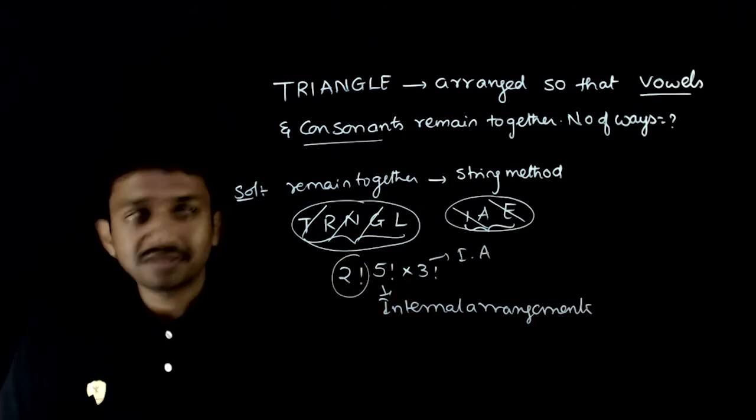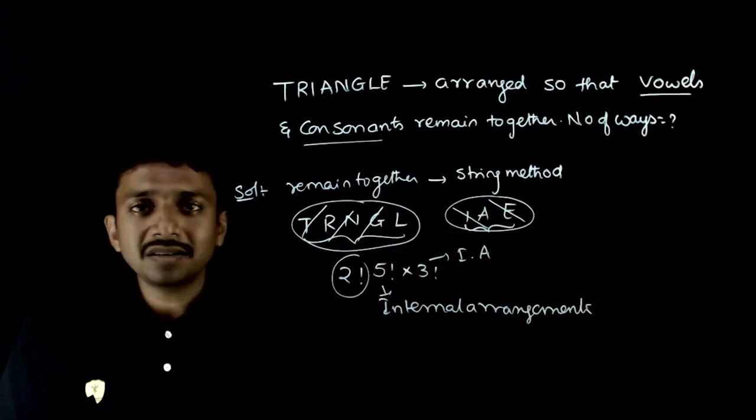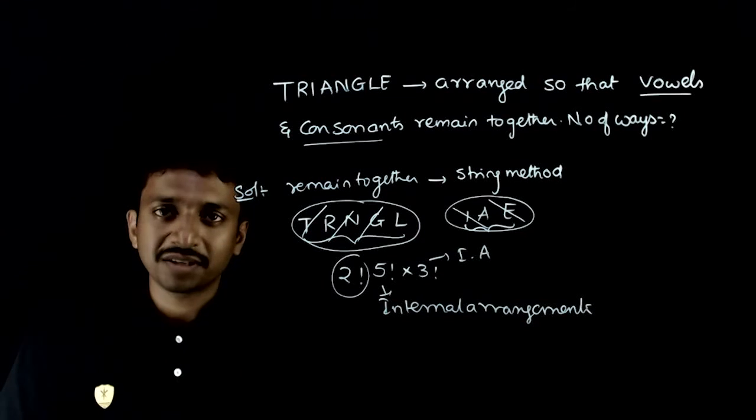These are external arrangements. As a whole there are 2 things, so 2 factorial ways to arrange them.